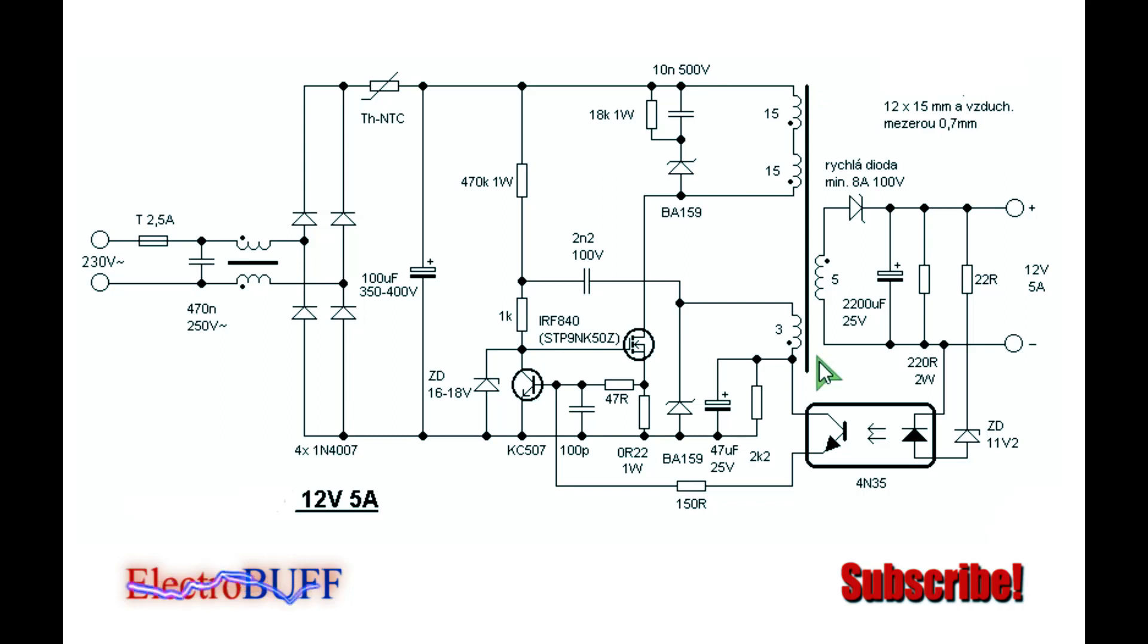For the transformer, ensure that it has a core of at least 1.25 centimeters squared to handle 60 watts. If you want one to handle like 120 watts, just use a larger core. You can obtain such flyback transformers from old computer ATX power supplies or any other switch mode power supplies lying around.